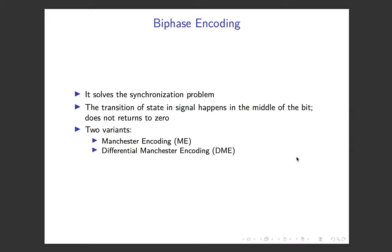What are the features of biphase coding schemes? As we have seen in the last few lectures, there is some synchronization problem in other encoding schemes. Biphase coding reduces the synchronization problem. The transition always happens in the middle of the bit period, and it never returns to zero — it remains either in the negative voltage side or the positive voltage side, using two polar voltages. There are two main variants: Manchester encoding and Differential Manchester encoding.